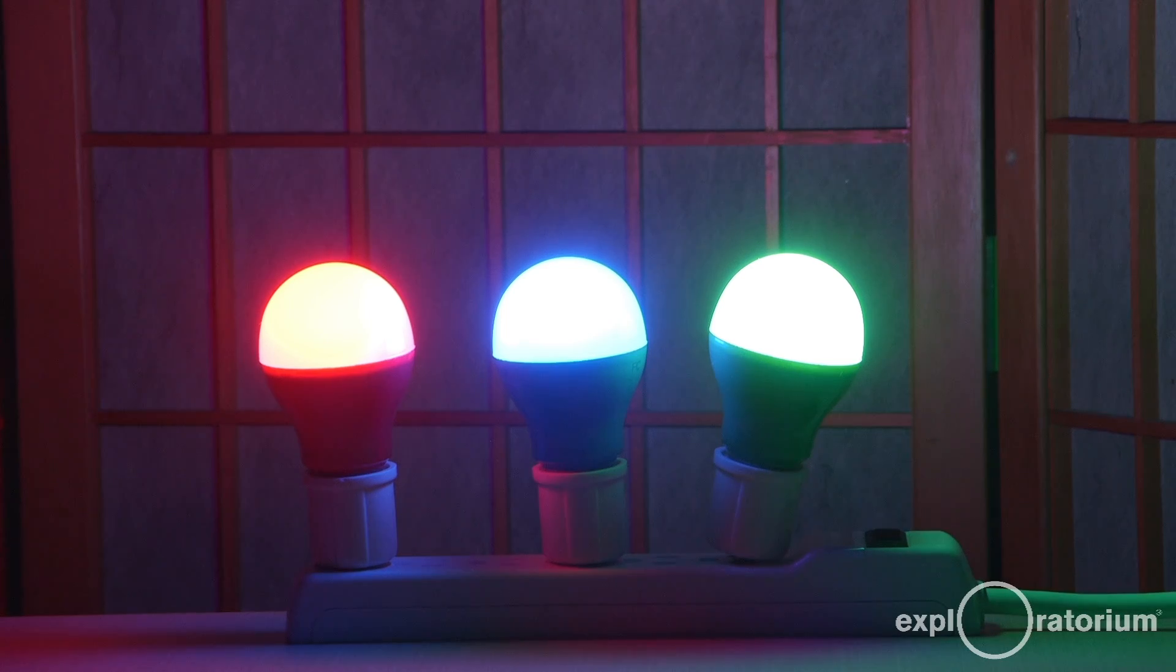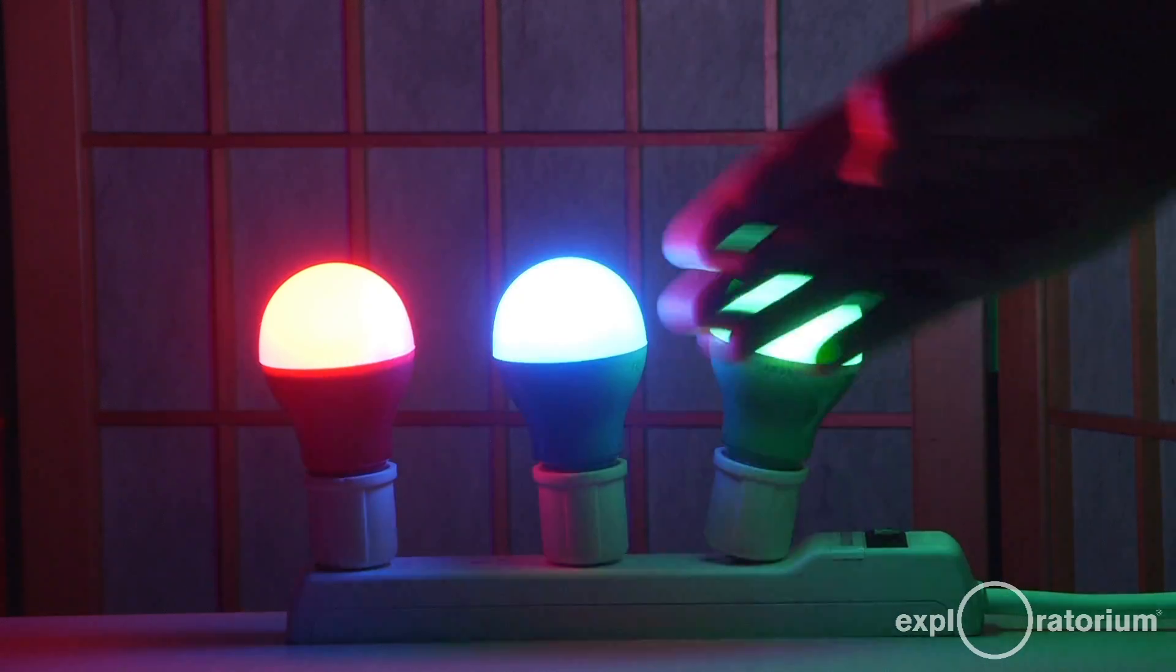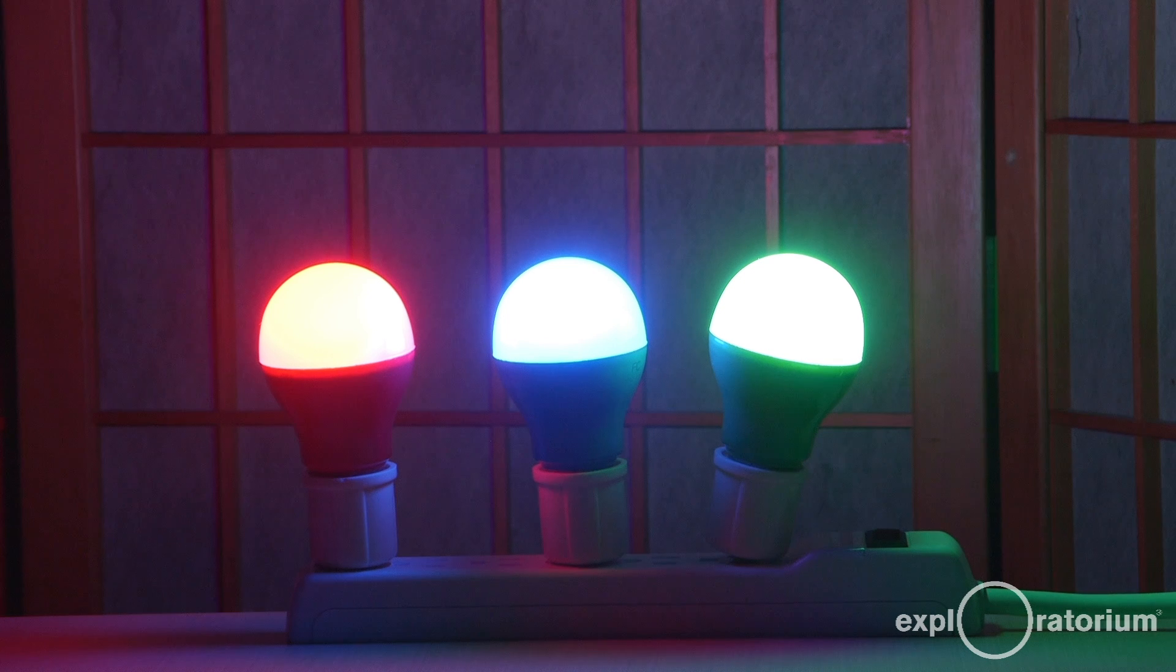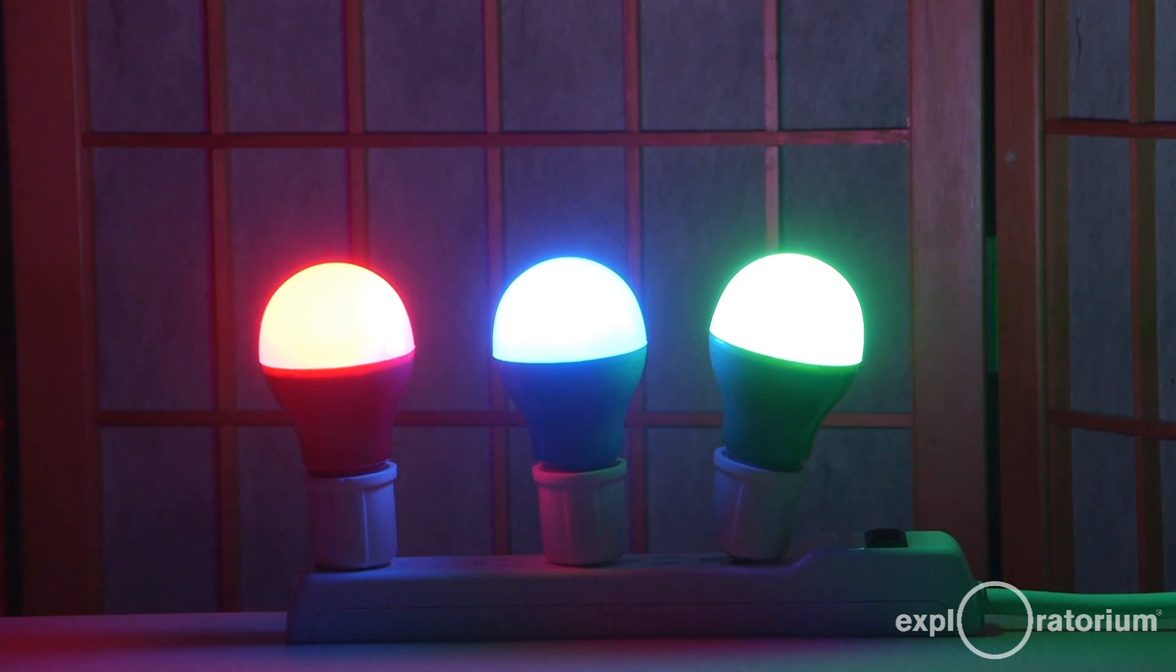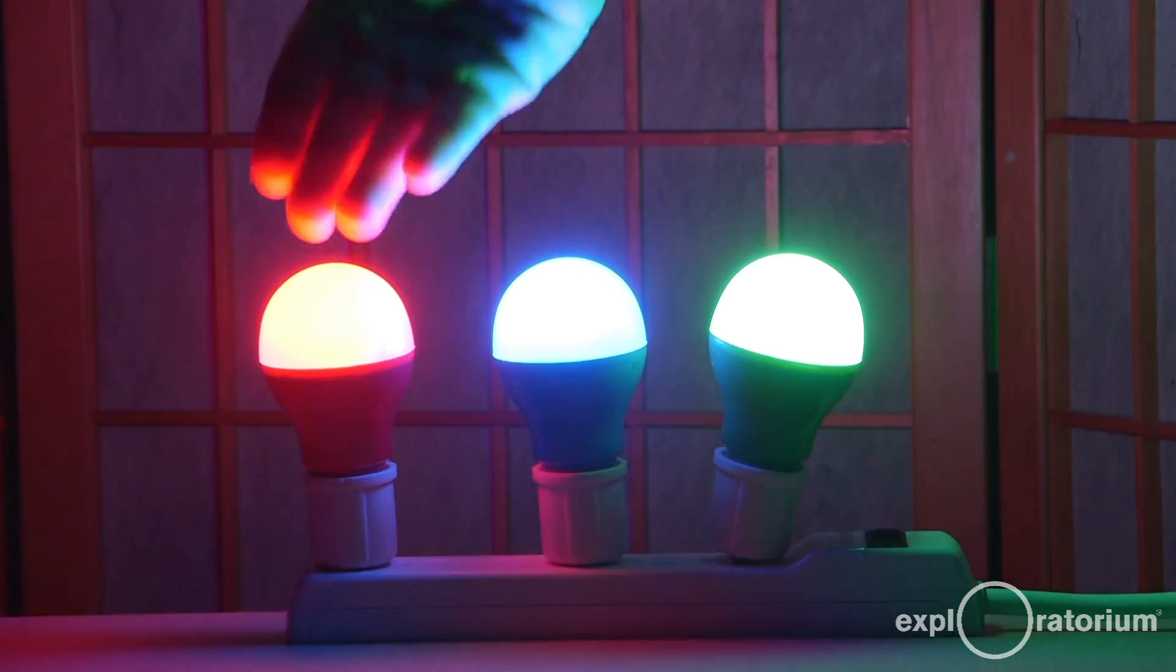For this portion of activities for poking fun at light, we're going to use all three of these bulbs. You might be asking yourself, why have we chosen just these colors? That's because in your eye, you only have receptors for red, green, and blue lights. That's it. Everything you see is caused by activating your red, green, and blue receptors.